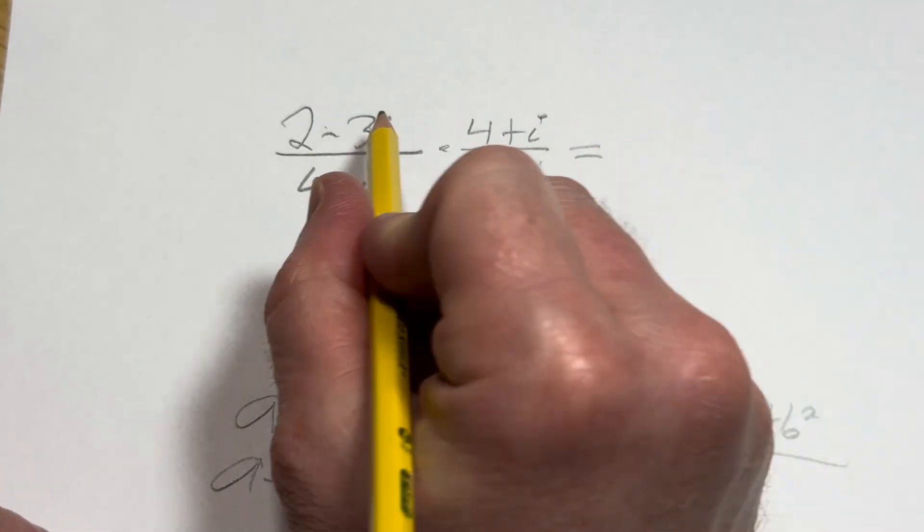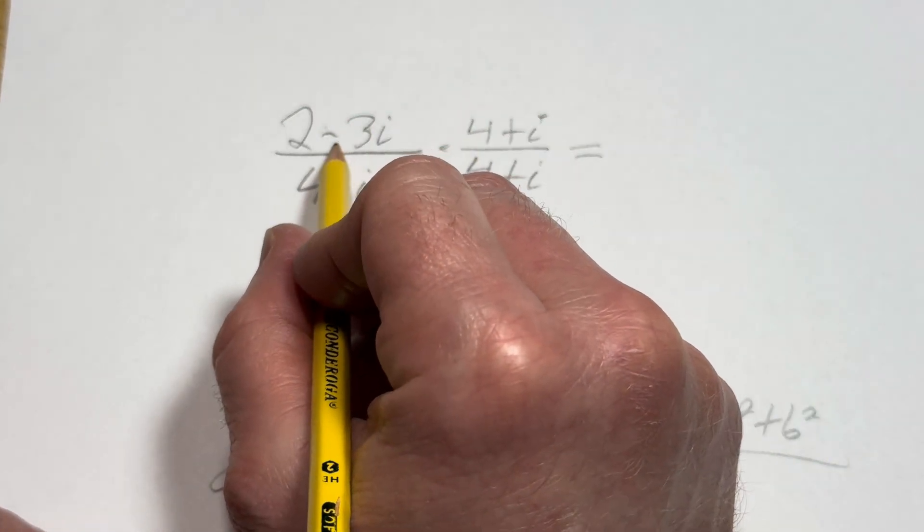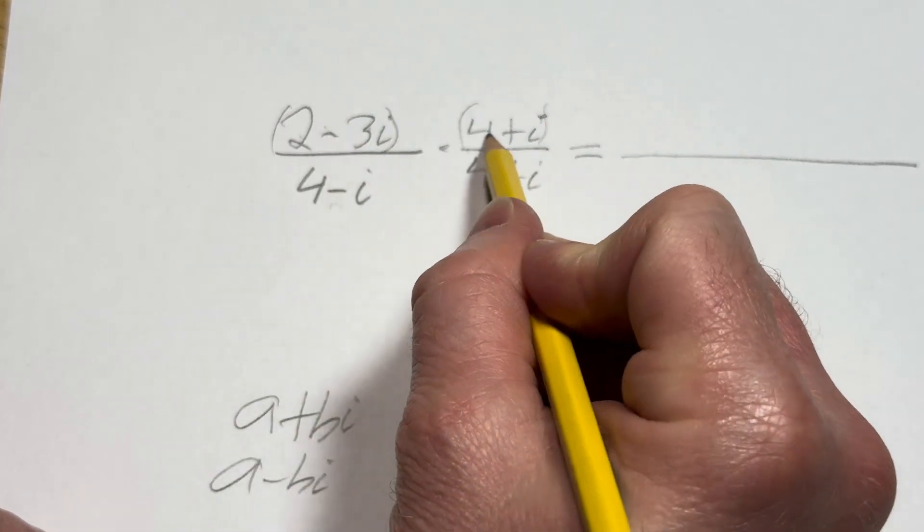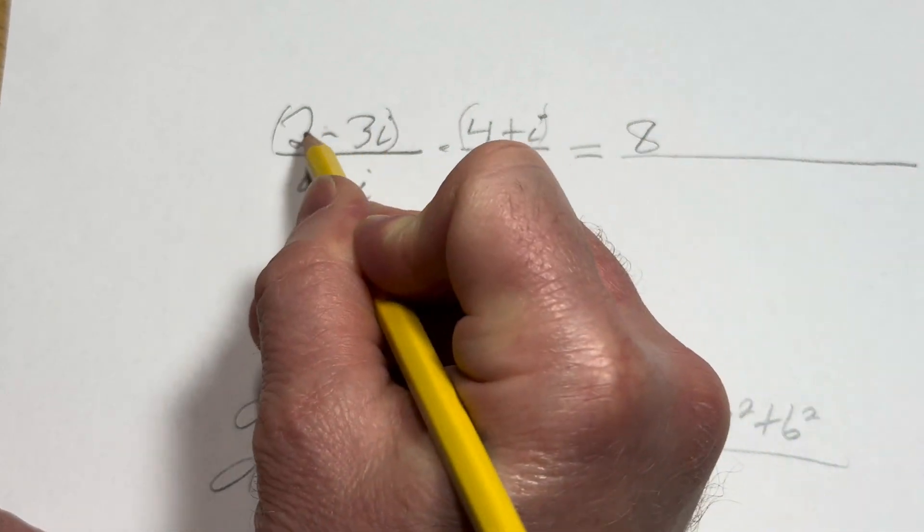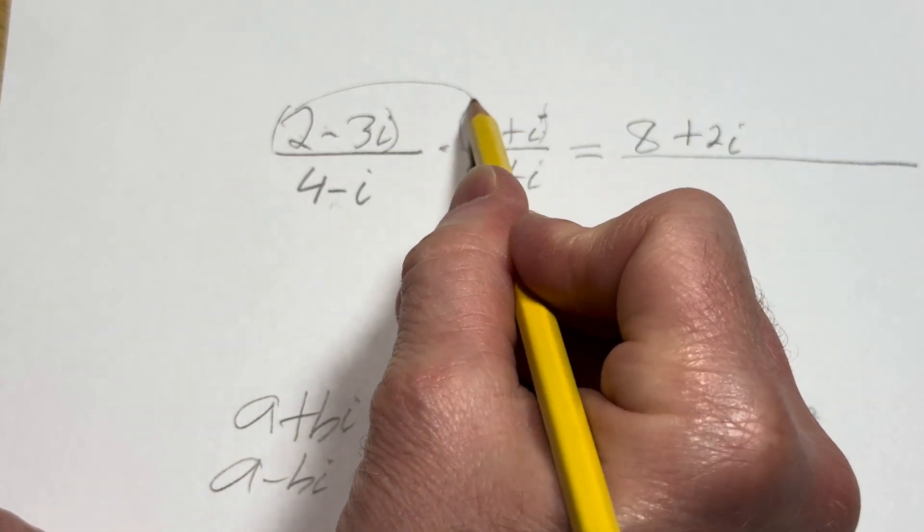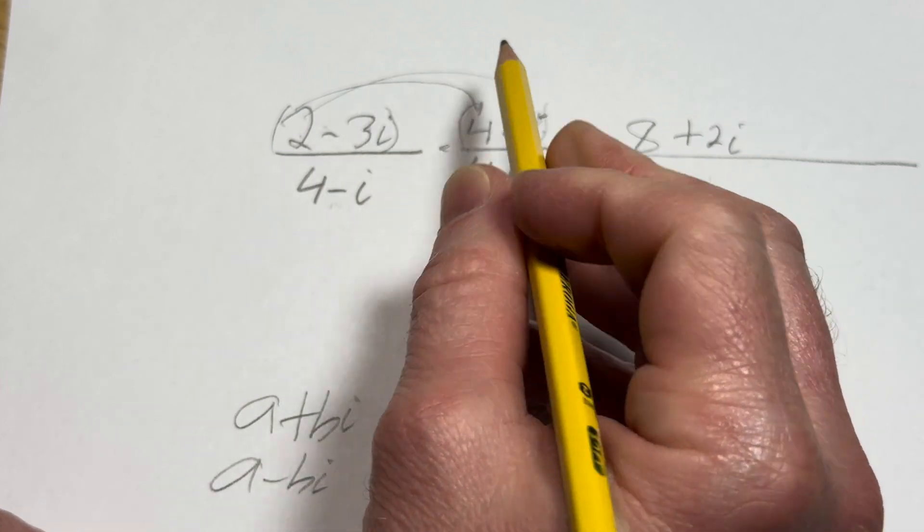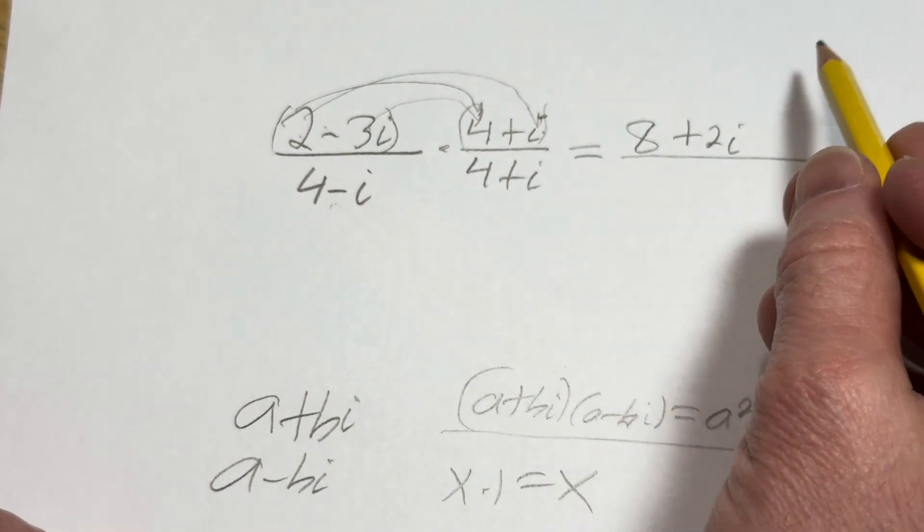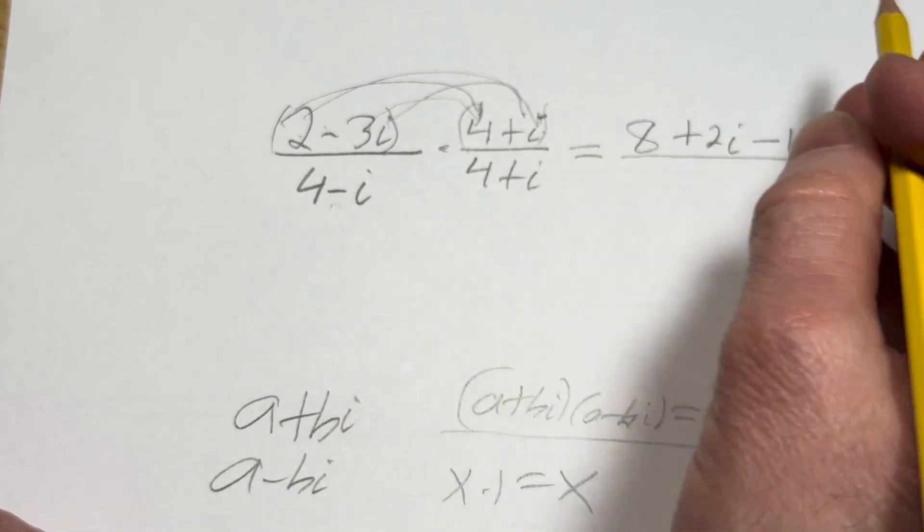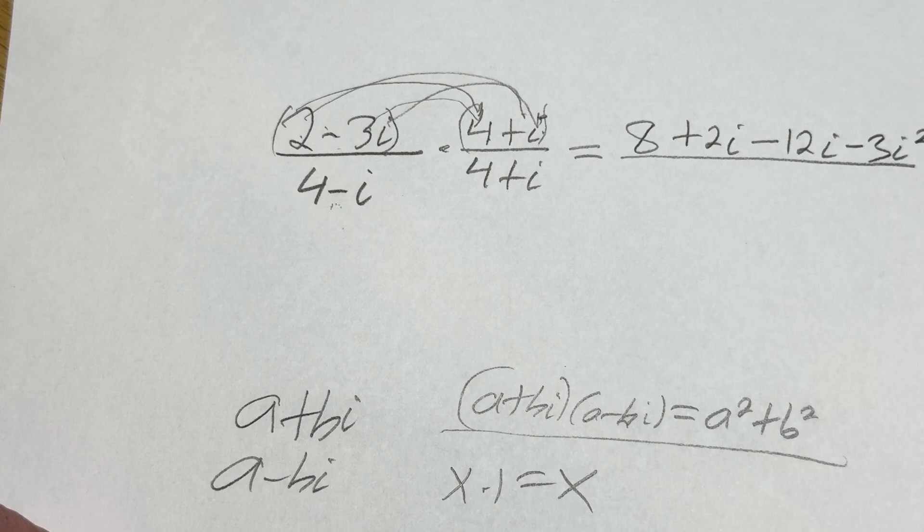All right, so this is equal to... I'm going to go ahead and just do the multiplication upstairs. So 2 times 4 is 8. 2 times i is 2i. So you've taken the 2 and multiplied it by both of these. And then negative 3i times 4 is negative 12i. Negative 3i times i is negative 3i squared.